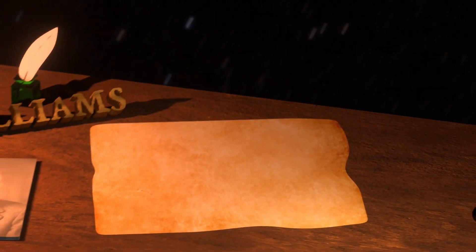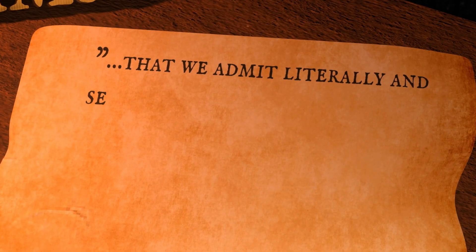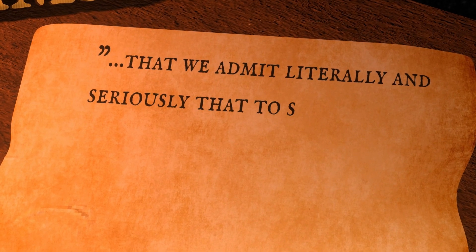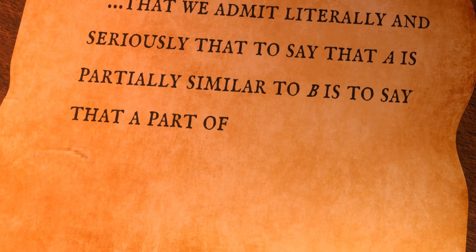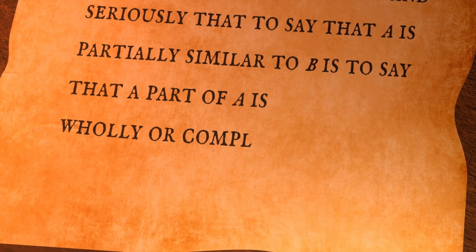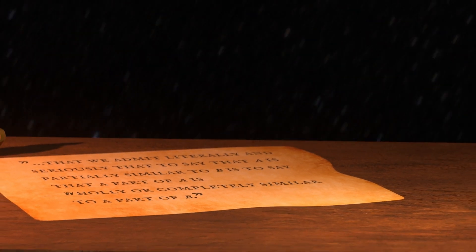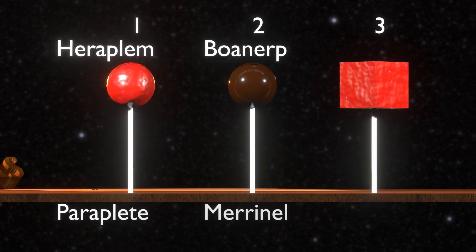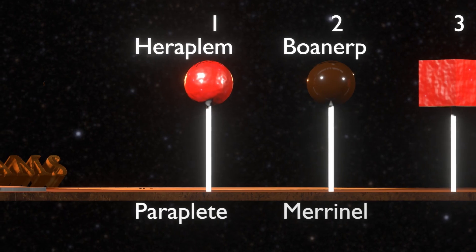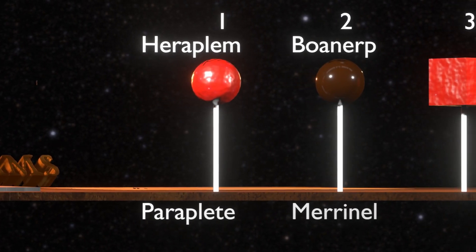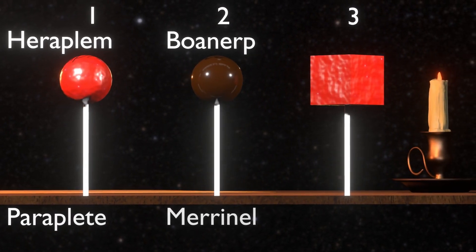Here Williams writes on the topic of exact resemblance: 'That we admit literally and seriously that to say that A is partially similar to B is to say that a part of A is wholly or completely similar to a part of B.' So the sticks of the lollipops, for example, completely resemble each other. But an important note here is that even though the sticks are exactly similar, they are not the same — they are distinct.